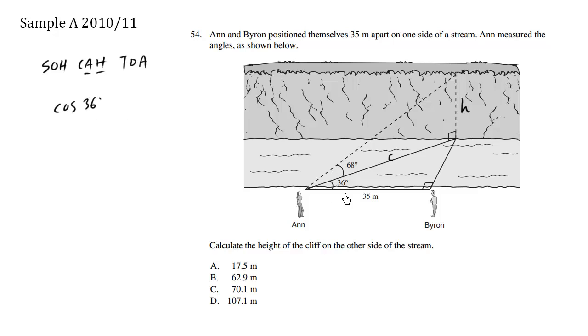Cos 36 degrees, that's this angle here, equals adjacent over hypotenuse, which is 35 over C. So we can solve for C by cross-multiplying. We can say that's the same thing as over 1, 1 times 35 is 35, and then C times cos 36. We can divide both sides by cos 36. So we have 35 over cos 36 degrees.